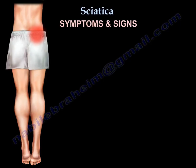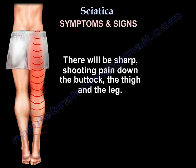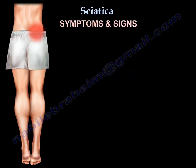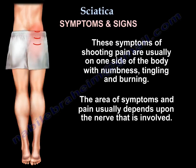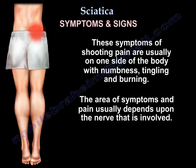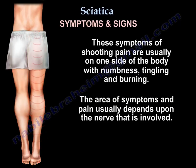Symptoms and signs include a sharp shooting pain down the buttock, the thigh, and the leg — usually on one side of the body — with numbness, tingling, and burning. The area of symptoms and pain usually depends on the specific nerve that is involved.